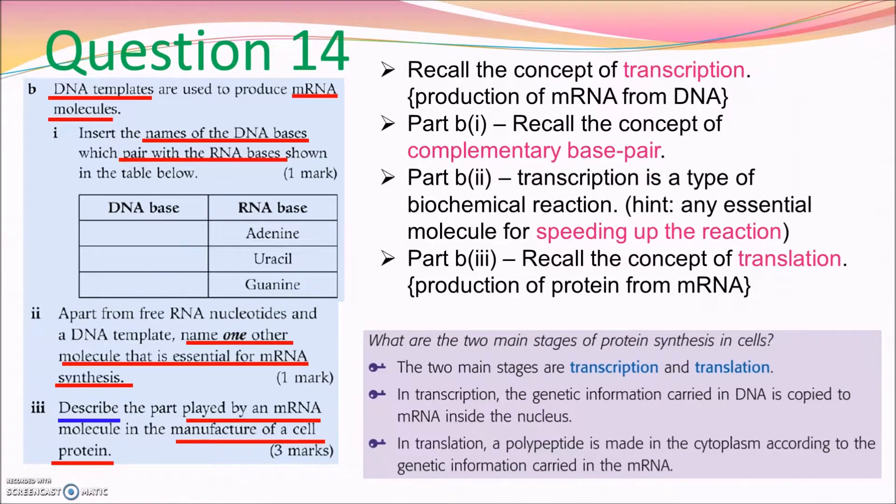Part 2, for building the mRNA, it's a kind of biochemical reaction, the transcription. Of course, we need the DNA templates, we need the free RNA nucleotides as the substrate. However, we also need another molecule to speed up the reaction. Of course, you must be able to recall that it's enzyme. But please tell me the name of the enzyme involved in the transcription. In part 3, you have to recall the role played by the mRNA in the protein synthesis. So please recall the concept of translation. Any molecules are involved in the translation. And any of the molecules, they are related to the mRNA as well.